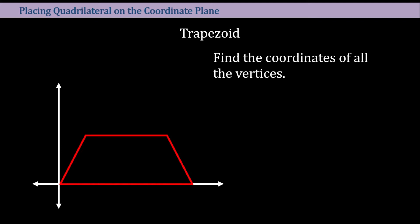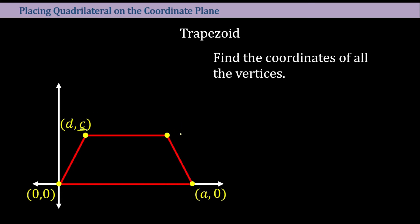Now let's try a trapezoid. The first vertex is at the origin (0, 0). The next one along the base is (a, 0) — choose any variable you like; I'll use a. Then we determine one of the upper vertices; I'll use (d, c). The y-coordinate of the other upper vertex must match, so it's also c. The x-coordinate of that other vertex doesn't need to relate to d or a, so I'll call it (b, c). That's how you place a trapezoid on a Cartesian plane.